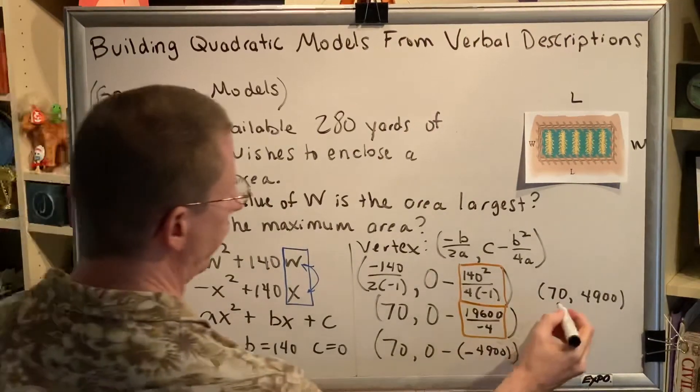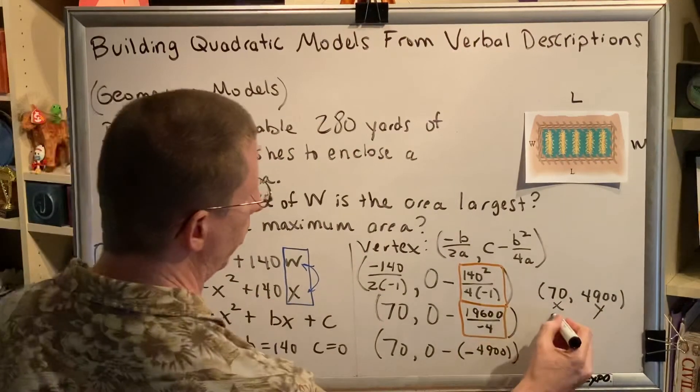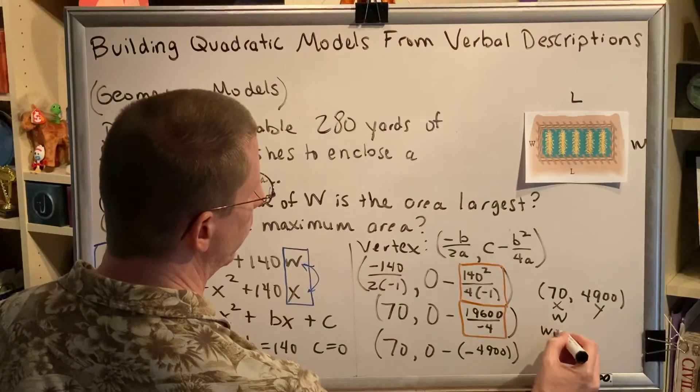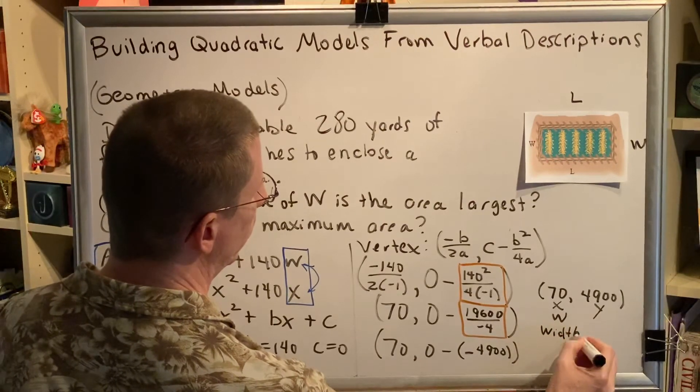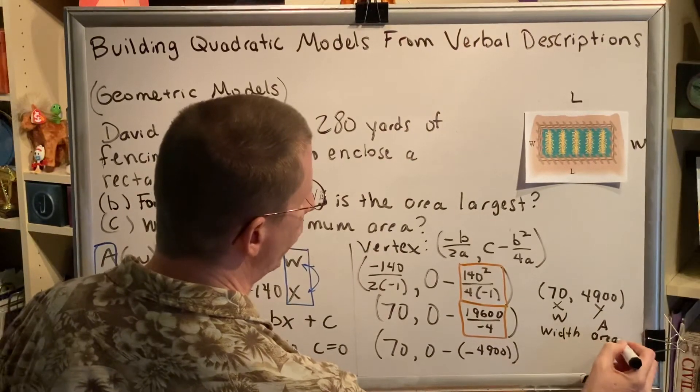So, for this particular instance, our vertex is an X and a Y, but in this problem, X represents W, which is the width, and Y represents A, which is the area. With this information, now we can answer both questions.